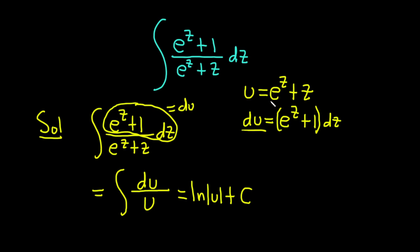u is equal to e to the z plus z. So in the next step, we can replace our u with e to the z plus z. This is the natural log of the absolute value of e to the z plus z, and we have our constant of integration, capital C.